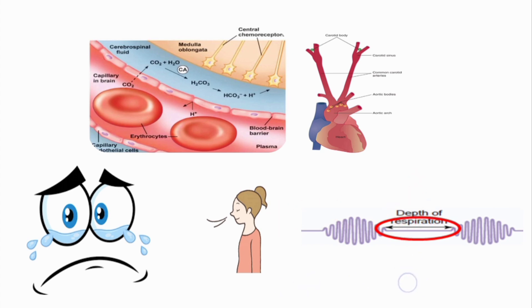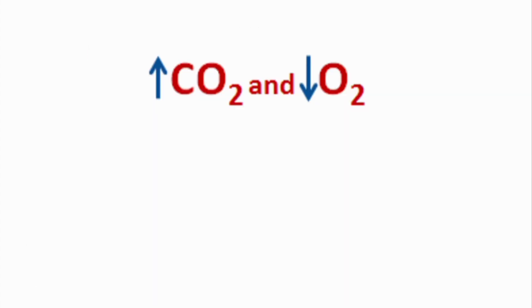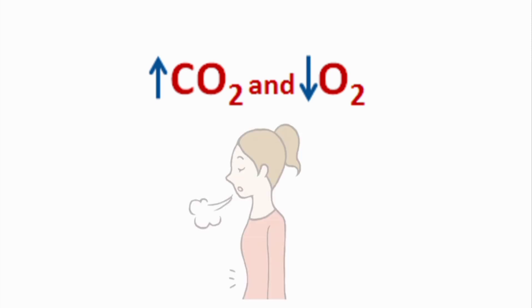When the brain does respond to the increased partial pressure of carbon dioxide, the person hyperventilates once again, as seen in this figure. This cycle repeats over and over again.